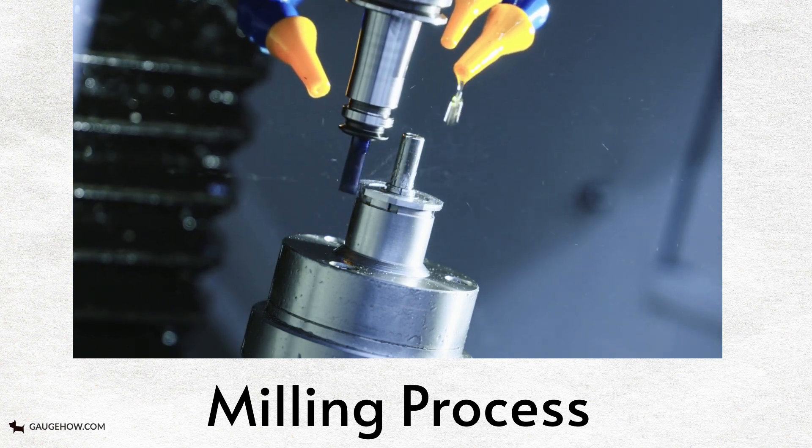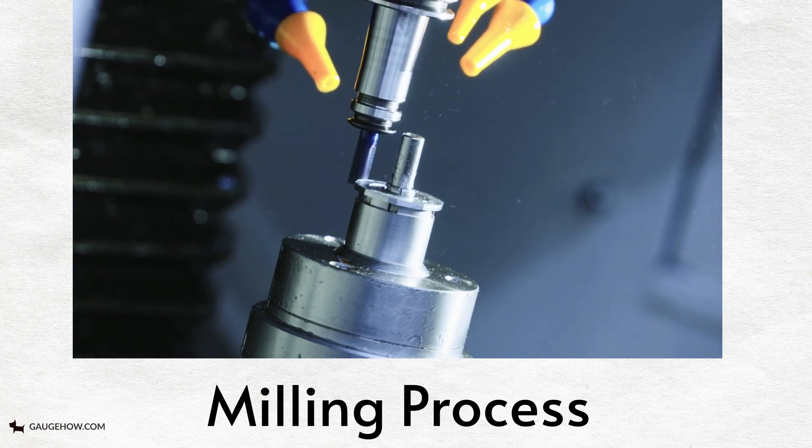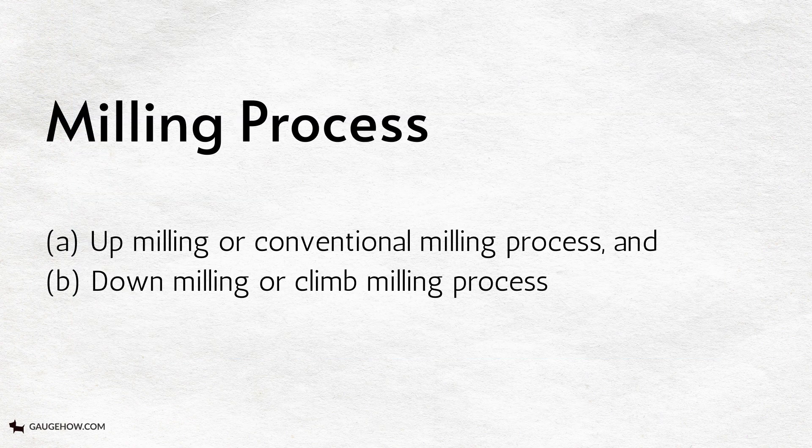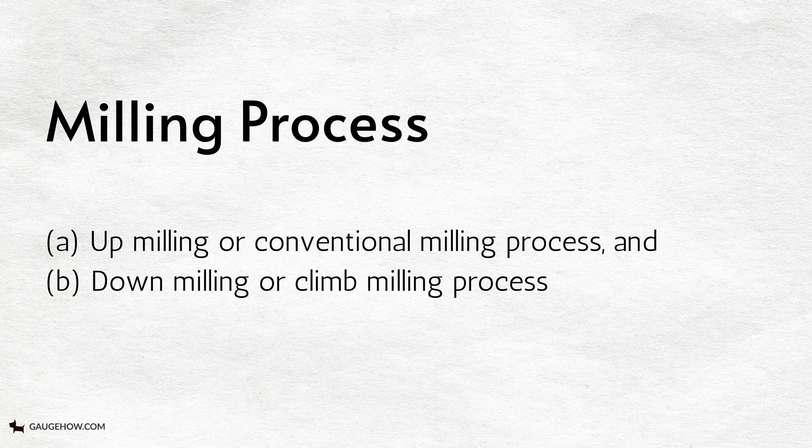Milling machines are one of the essential machines in any modern machine shop. Generally there are two types of milling processes. These are called up milling or conventional milling processes and down milling or climb milling process.